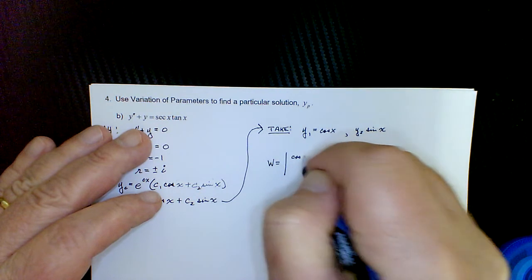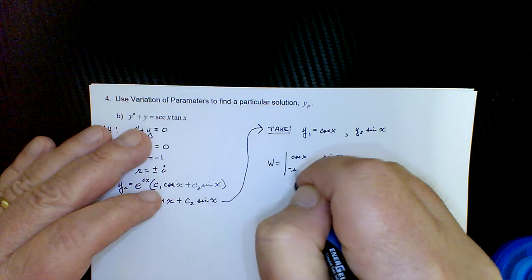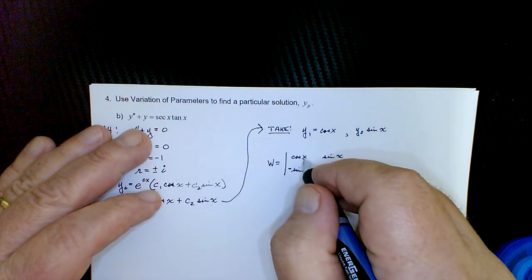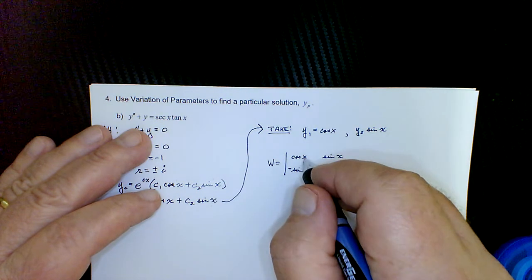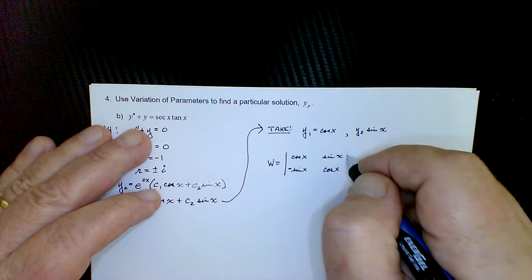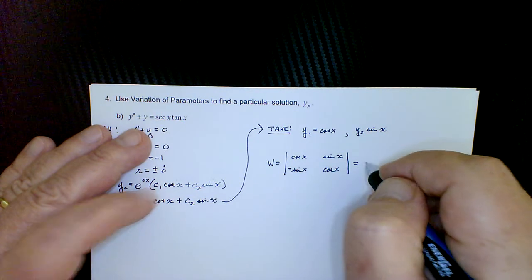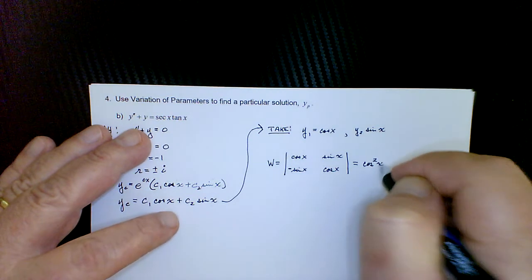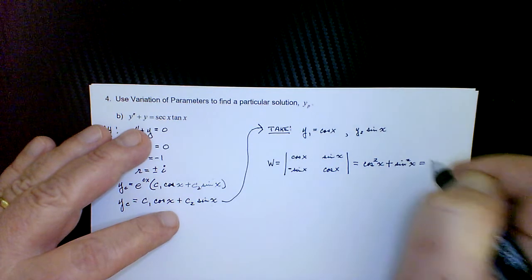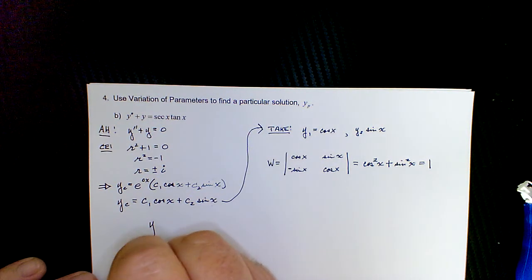We set up the Wronskian: first row is cosine(x) and sine(x), second row is their derivatives, minus sine(x) and cosine(x). Note that if there were a coefficient like 3 inside, we'd get minus 3 sine(3x) and 3 cosine(3x) — we'll see that in the next example. Calculating the determinant gives cosine²(x) plus sine²(x), which by our Pythagorean identity equals one.